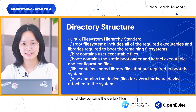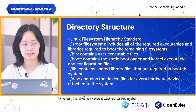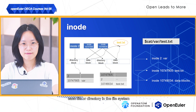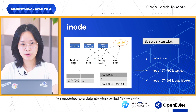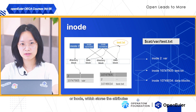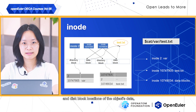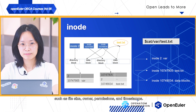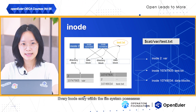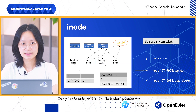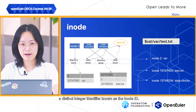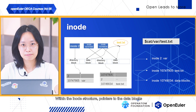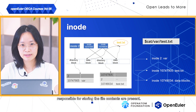In any Linux system, each file or directory in the file system is associated with a data structure called the index node, or inode, which stores the attributes and disk block locations of the object's data, such as file size, owner, permissions, and timestamps. Every inode entry within the file system possesses a distinct integral identifier known as the inode ID. Within the inode structure, pointers to the data blocks responsible for storing the file contents are present.